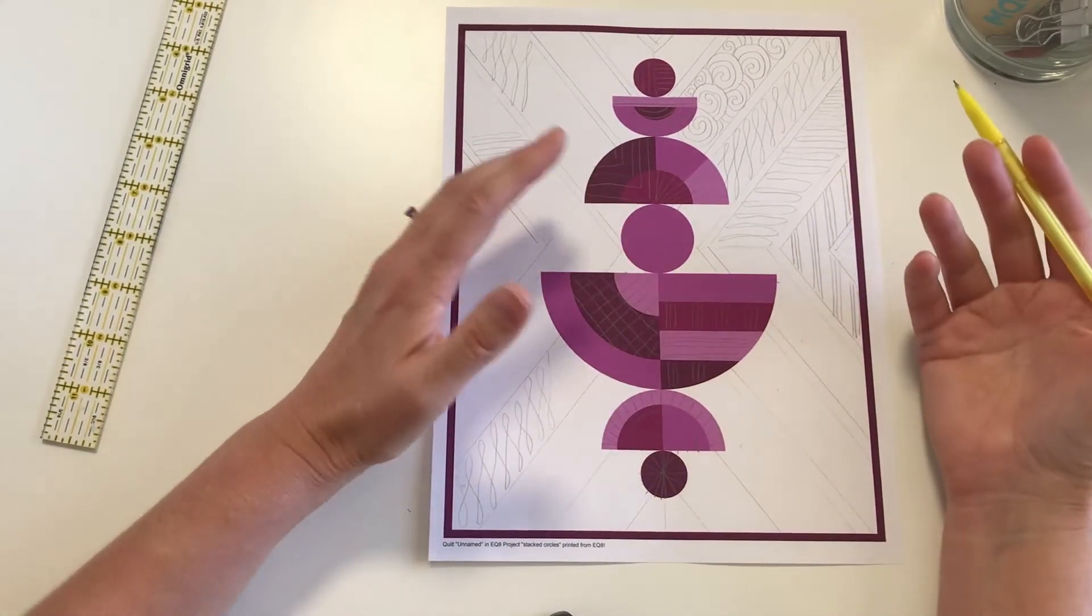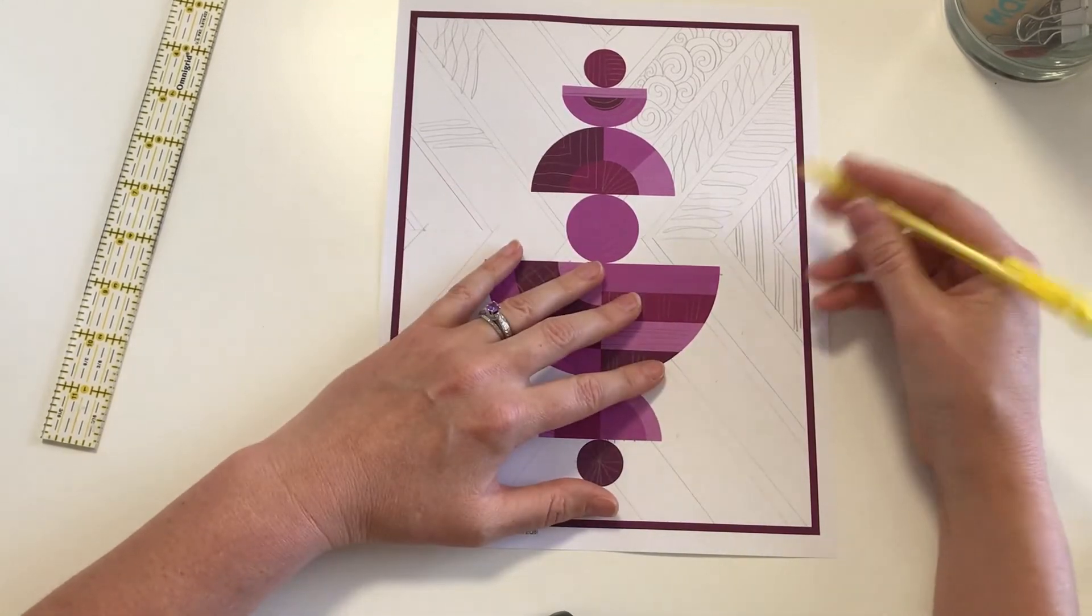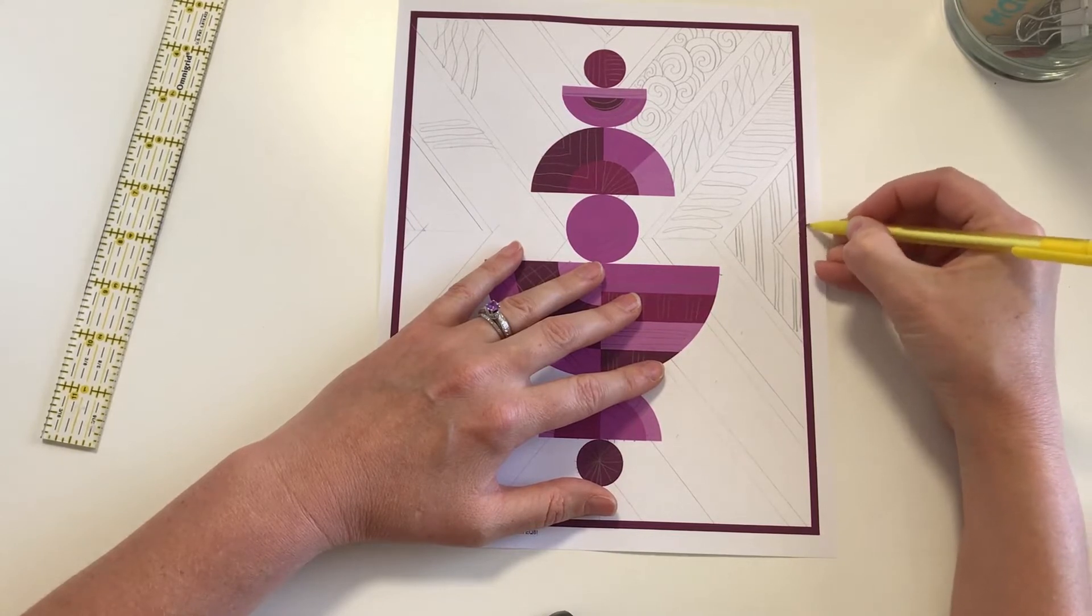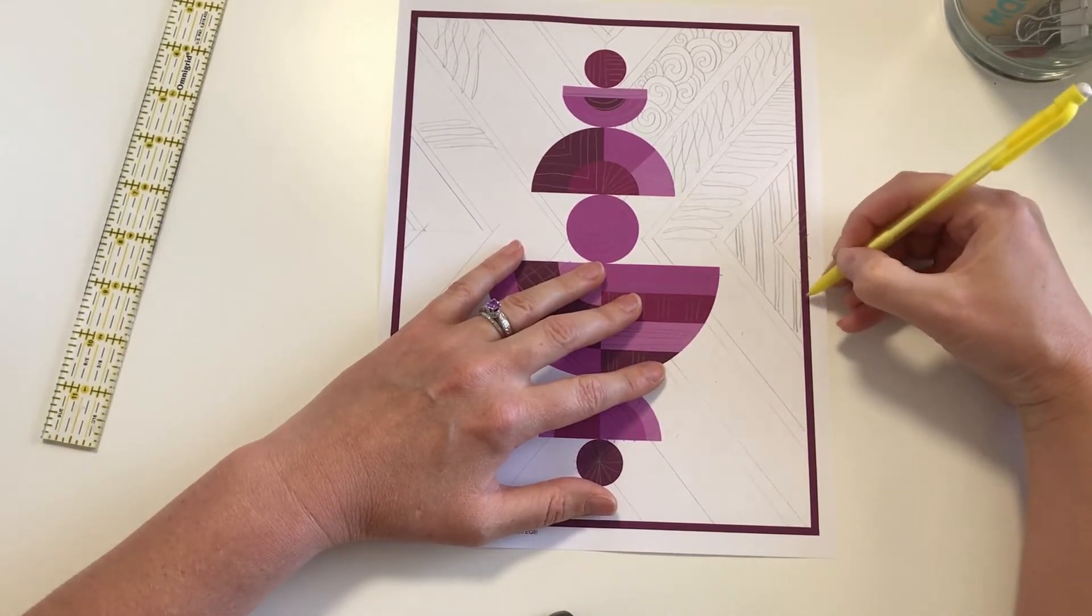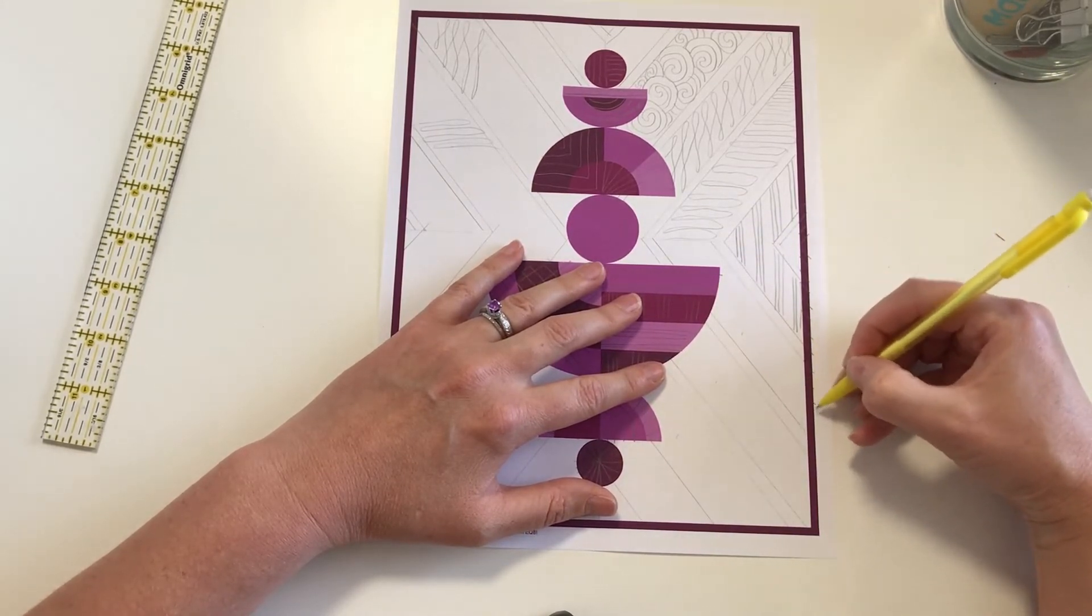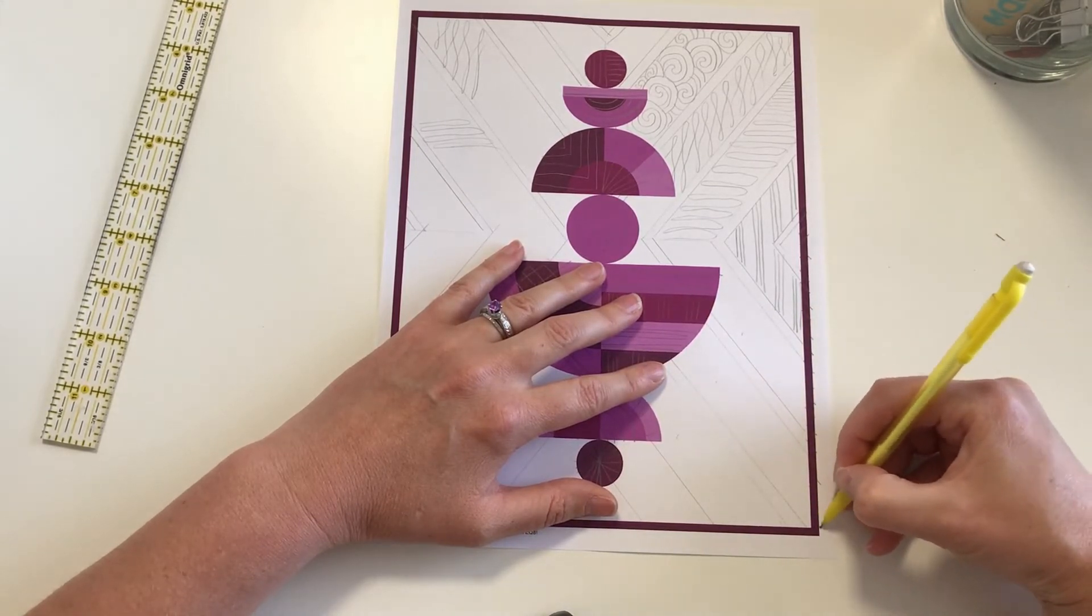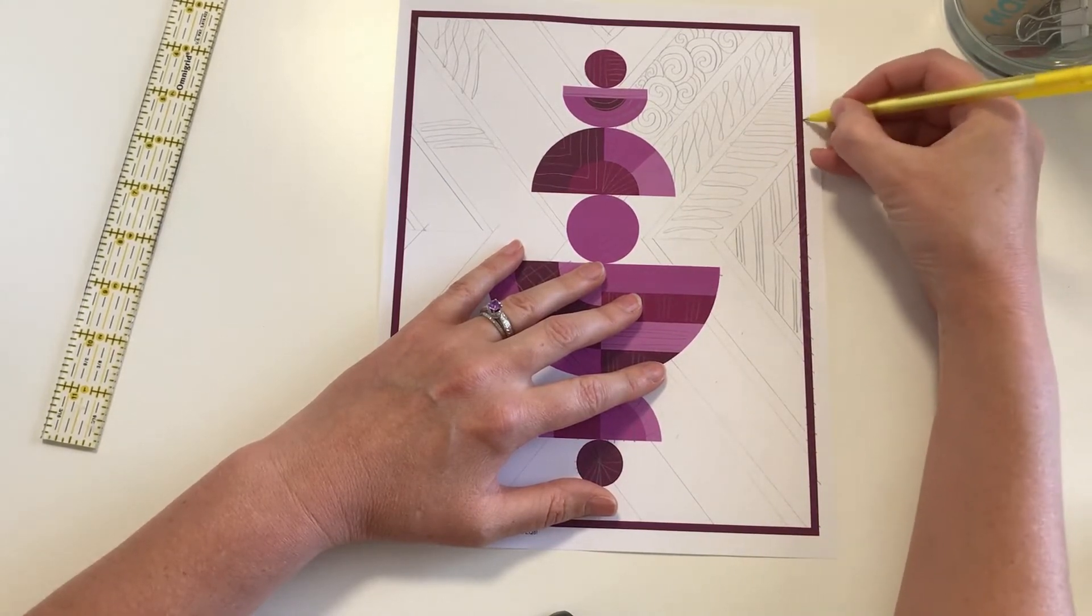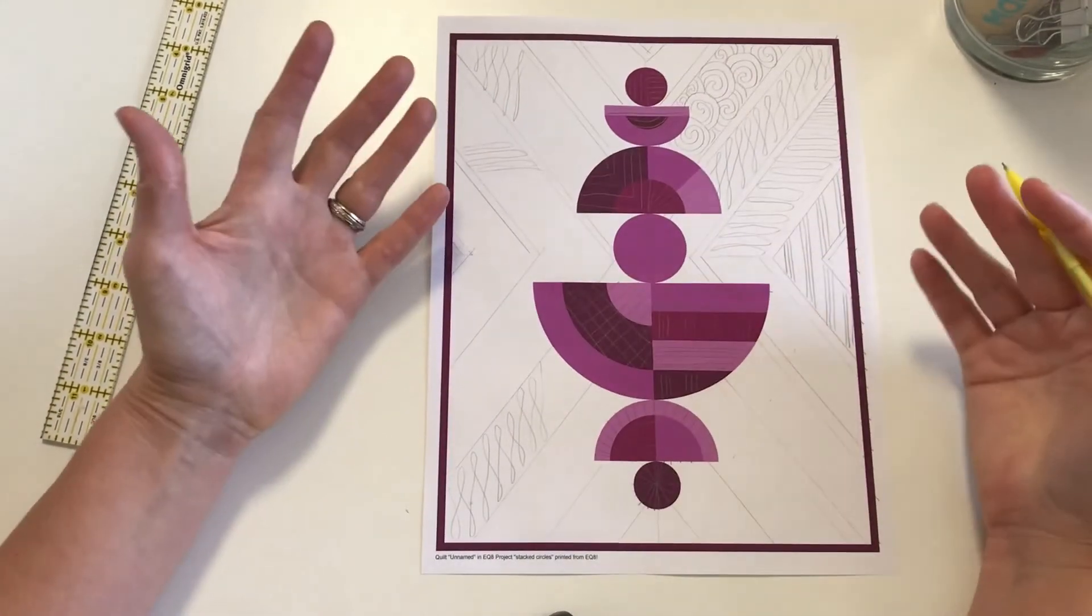Sometimes borders can be really tricky. This was a very small border. So I'm not going to complicate it. I'm not going to try to do something fancy in there. And I actually just went ahead and echoed the same lines here, but I did them closer together. I like to do borders kind of hold the whole thing down. It makes those who are going to bind it later very happy because it's not going to move on them as they're doing it. The border all the way around just has lines spaced about an inch apart that follow the same angle of the quilting on the inside of the quilt. And that was it.